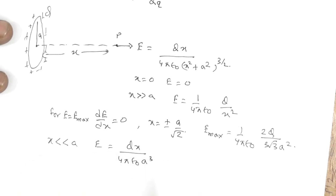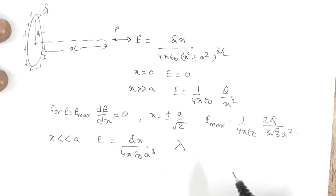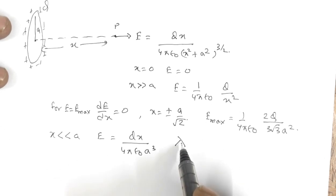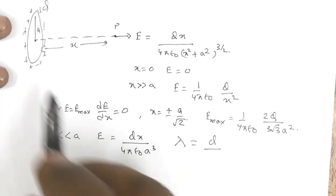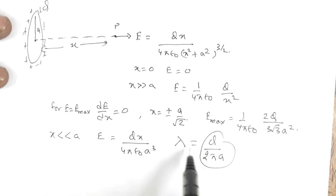Now if λ is the linear charge density — charge per unit length, so Q = 2πaλ — this Q/(2πa) can be replaced by λ...